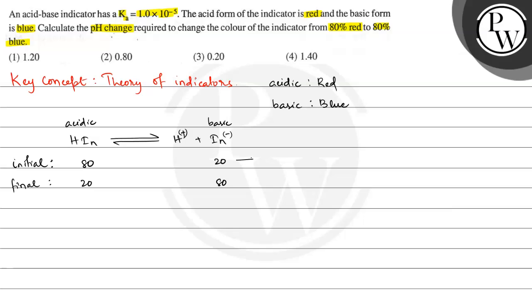Now for the initial case, pH let it be pH1. This is equal to pKa plus log [IN-] divided by [HIN] concentration. This is from Henderson's equation.